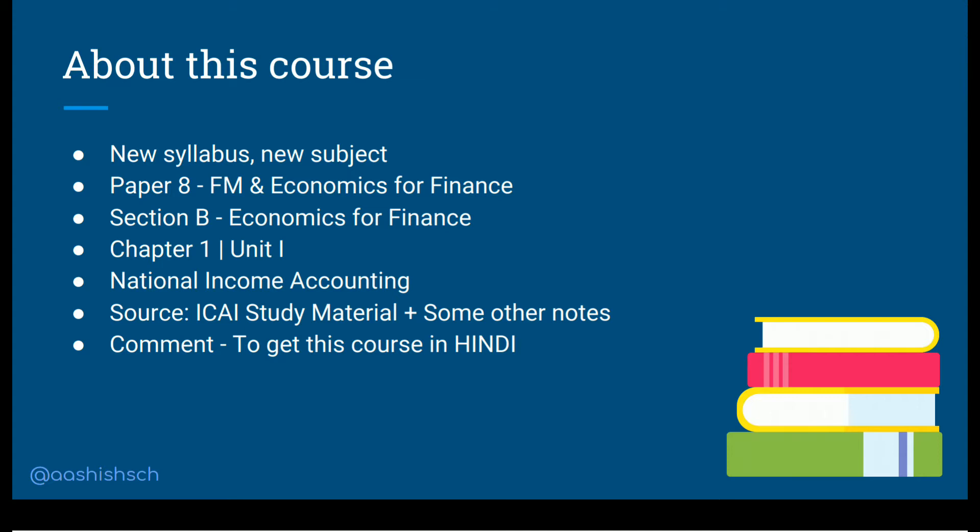This course is as per the new syllabus — the new subject that has been added is Financial Management and Economics for Finance for the CA Intermediate people. In this course, we'll be covering the Economics for Finance portion, specifically Chapter 1, Unit 1, which is National Income Accounting. The source material I'll be using is the ICAI study material plus some additional notes that I'll be sharing through my slides.